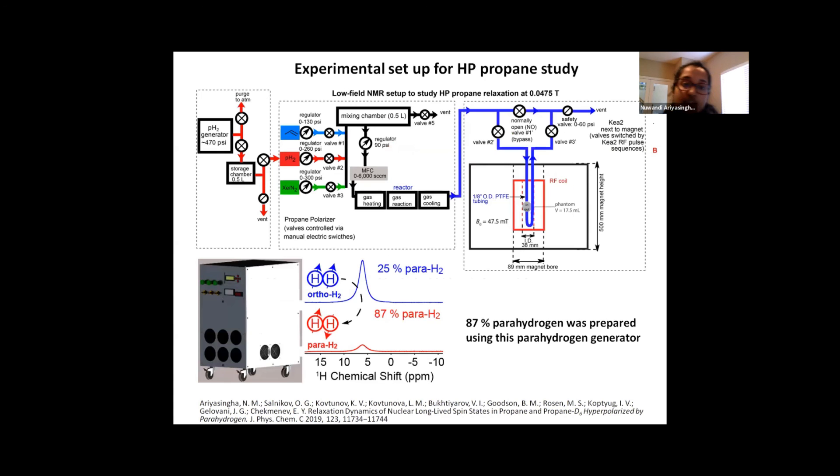The experiments were done in two different fields: a low-field NMR spectrometer setup operated at 47.5 millitesla and at a high-field setup operated at 1.4 tesla. So this is the schematic of the low-field setup that we used, which consists of three different parts: a parahydrogen generator, the propane polarizer, and the spectrometer.